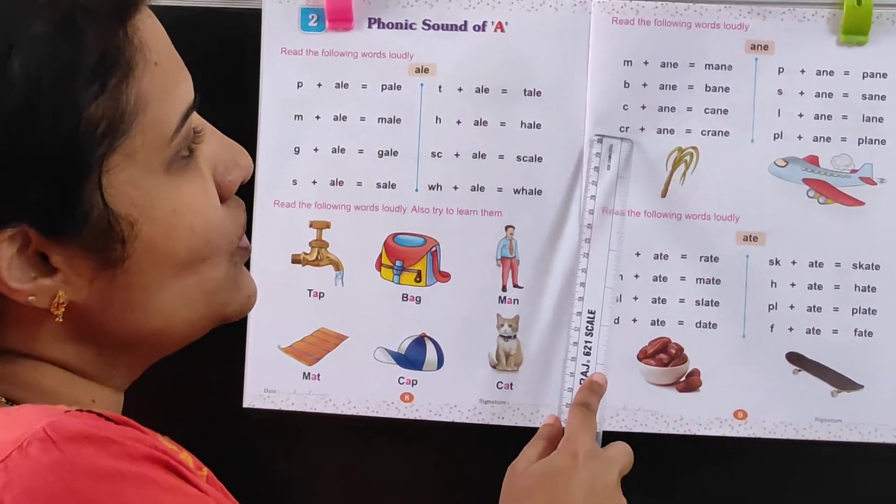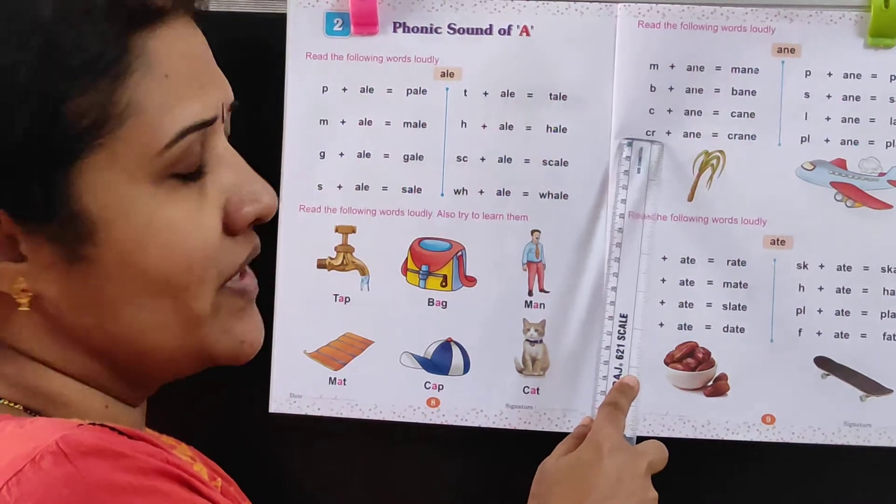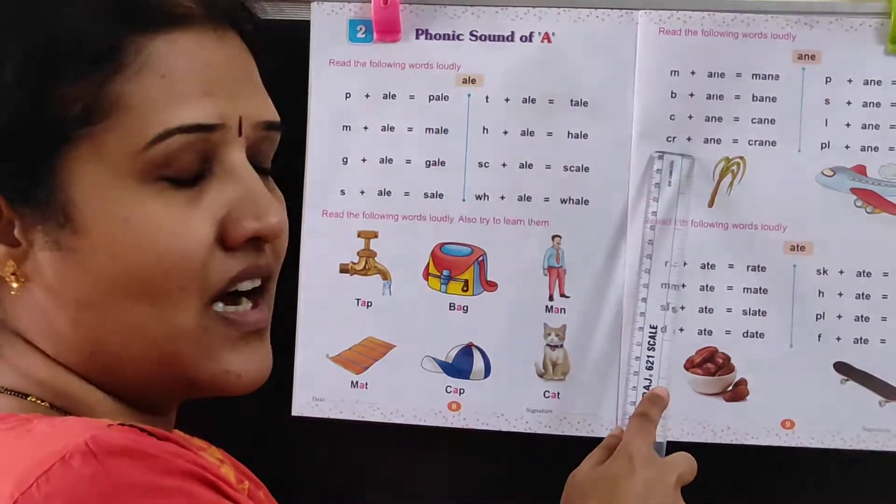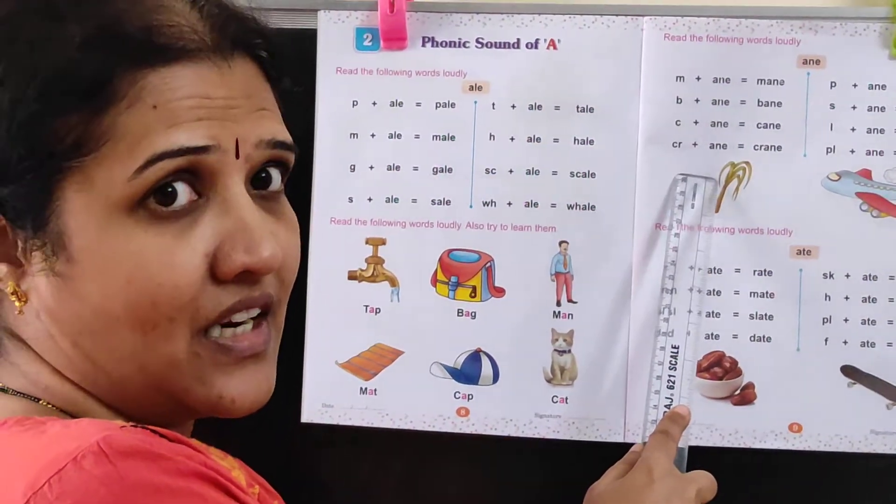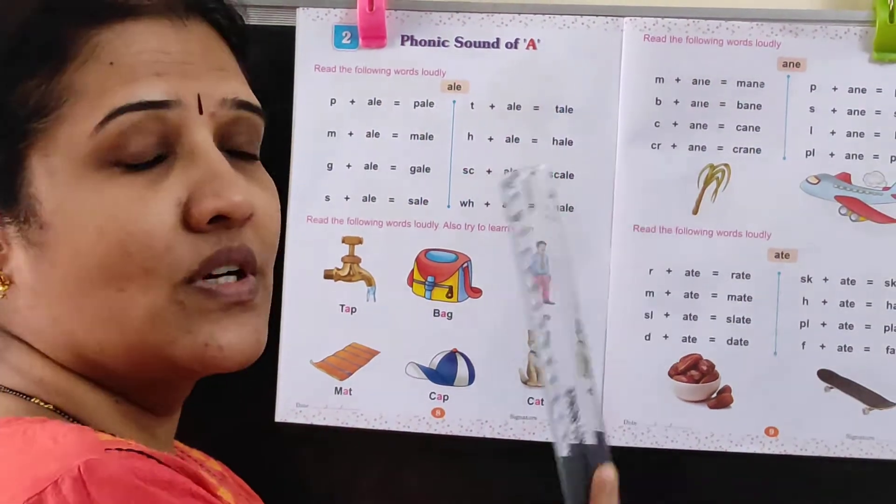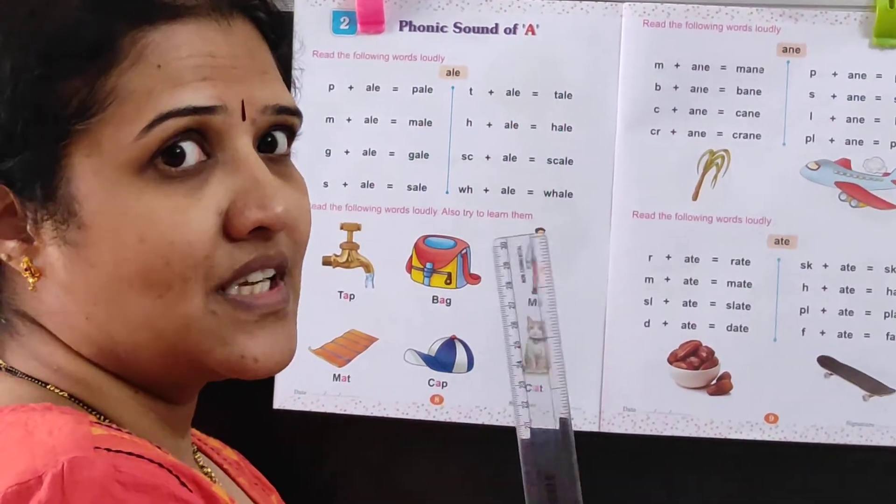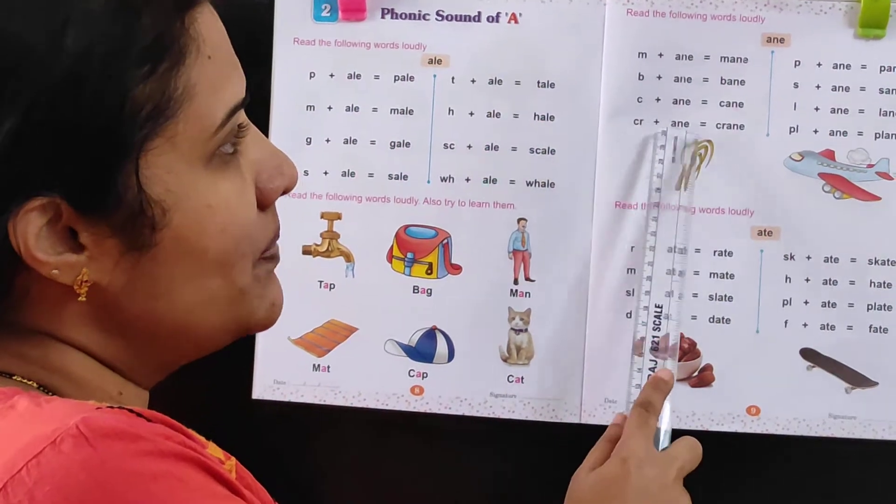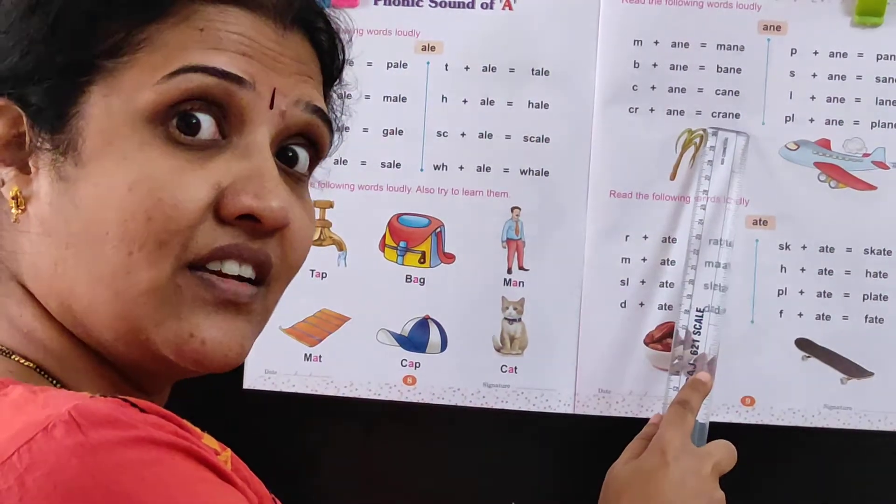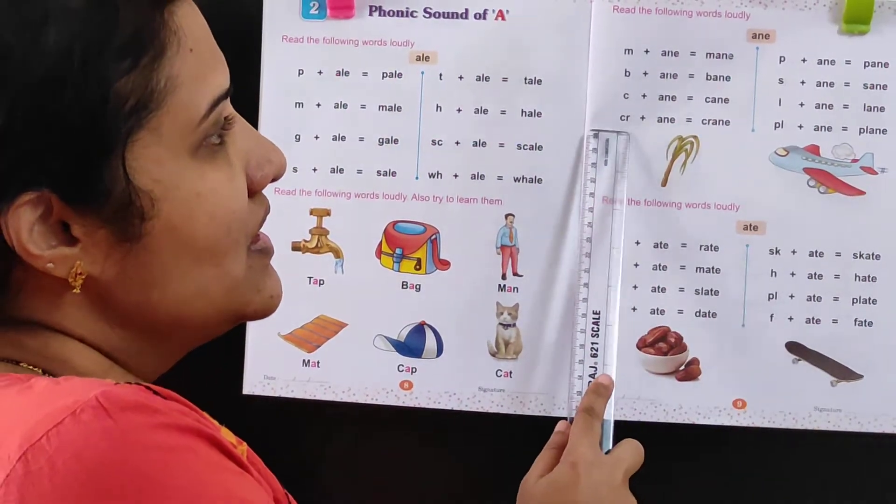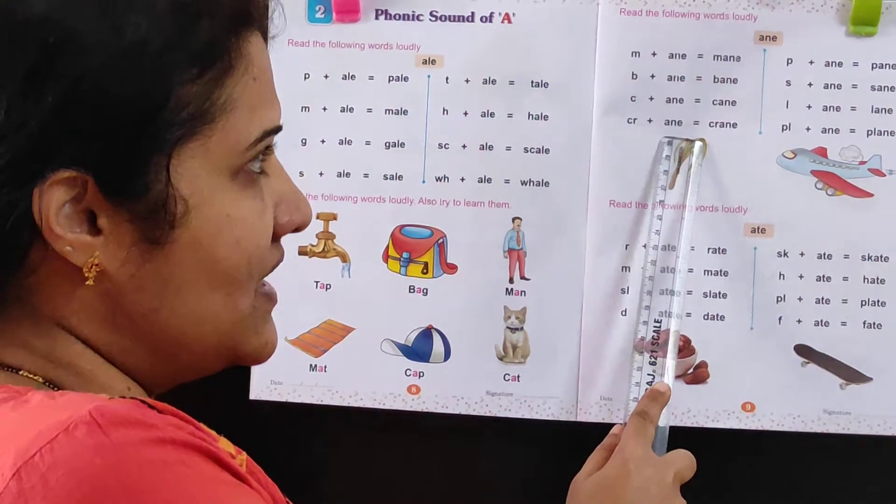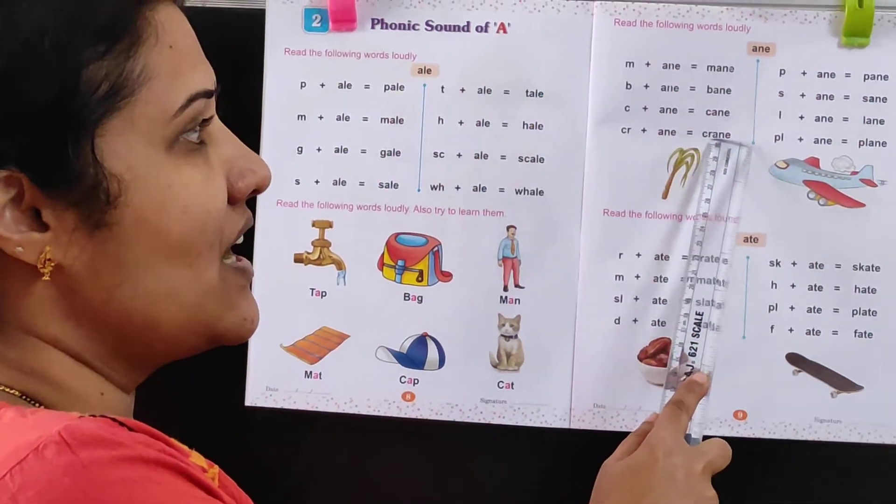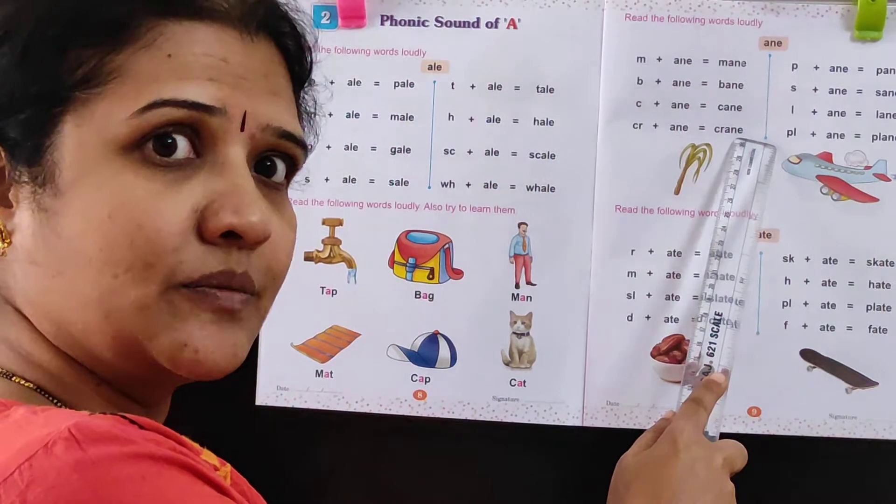Now see here, you have got two letters. C and R. When C and R come together, C-R plus A-N-E is Crane. C-R-A-N-E, Crane.